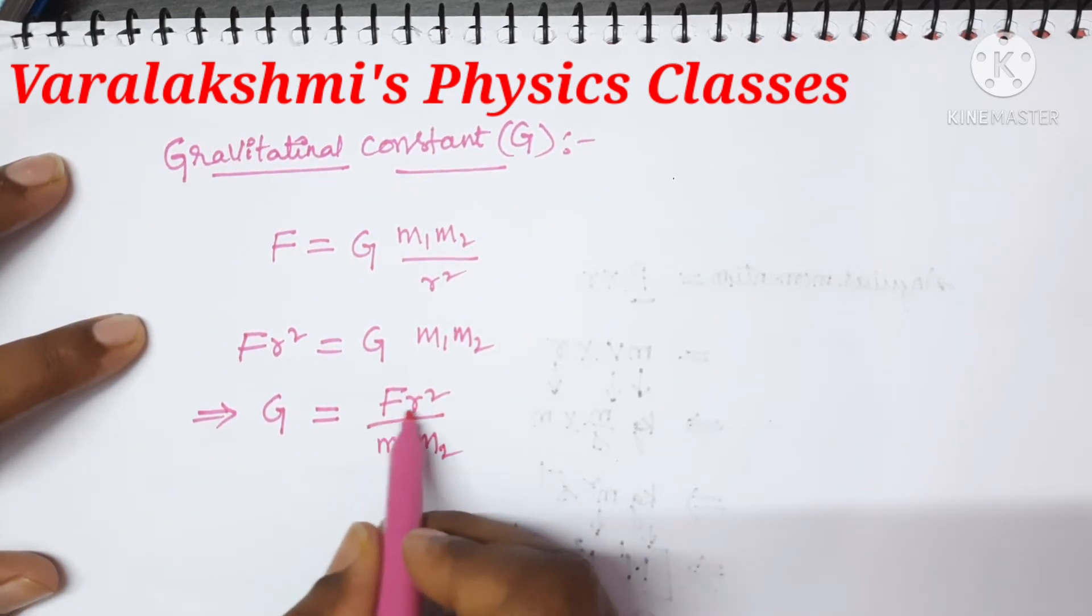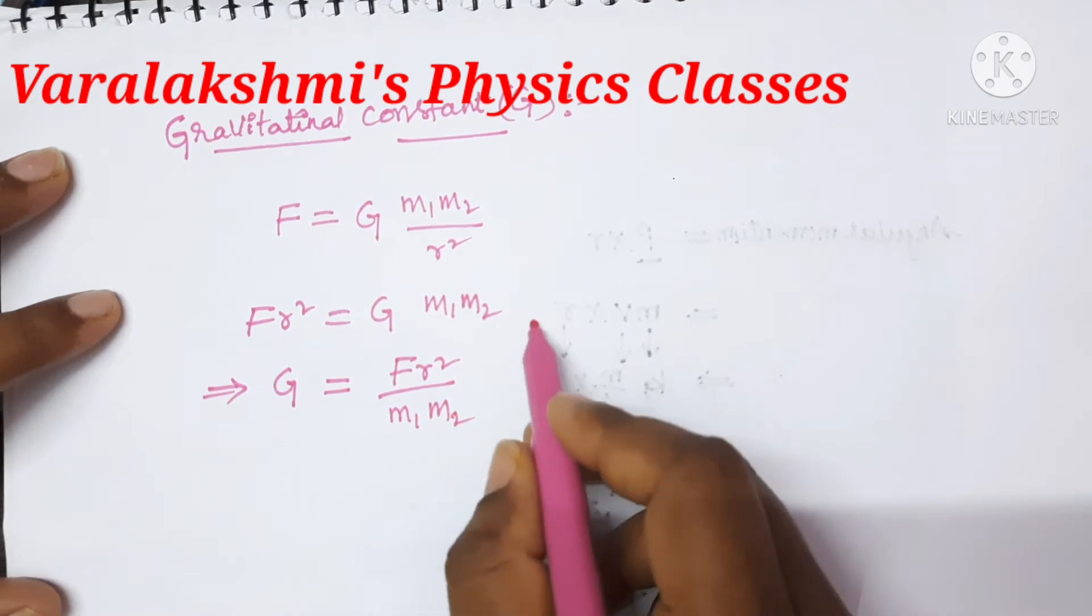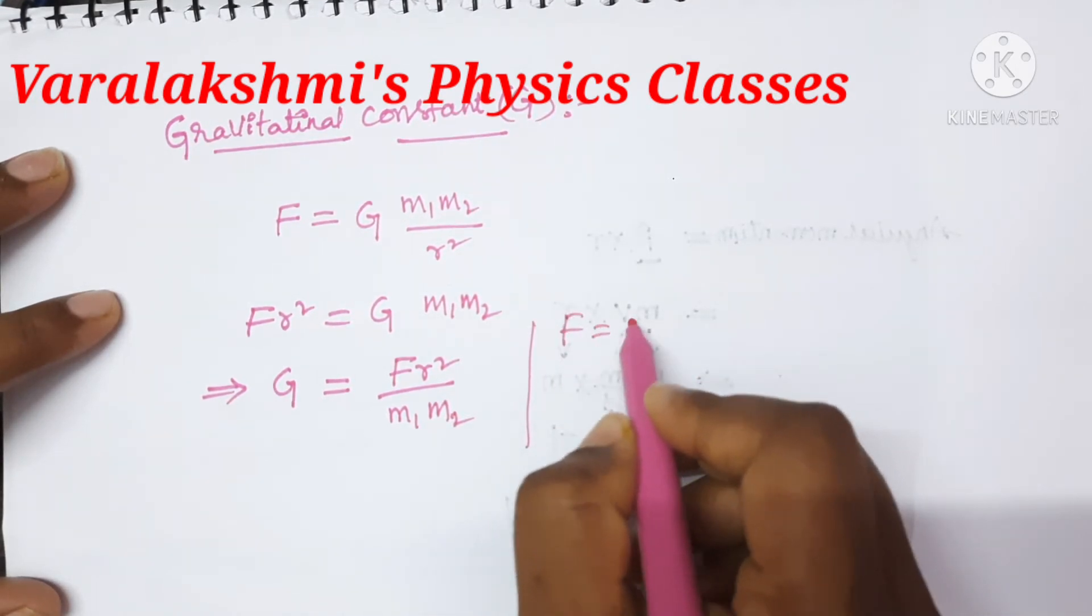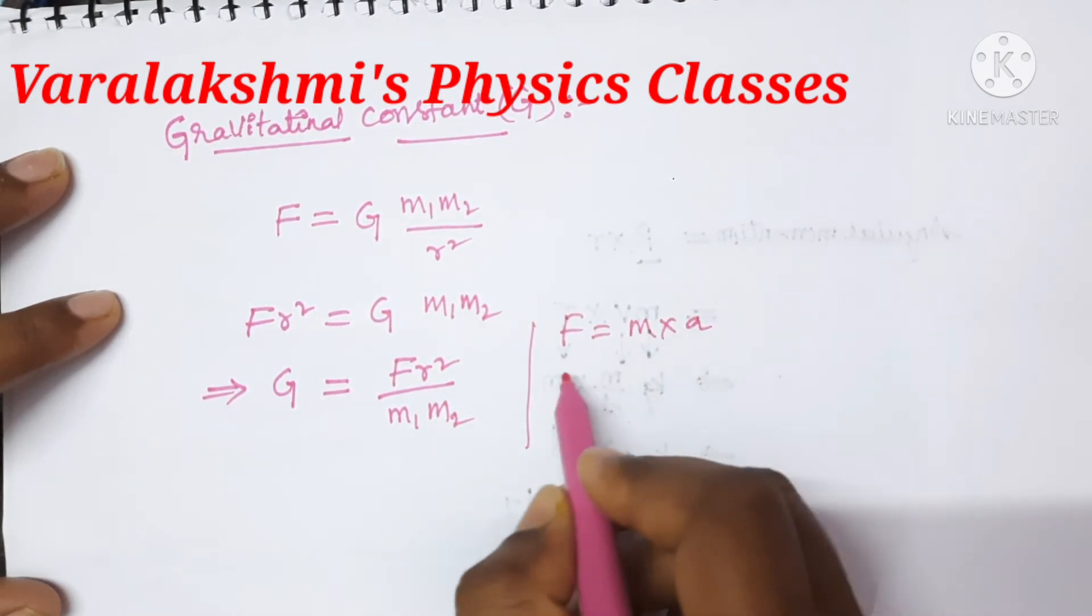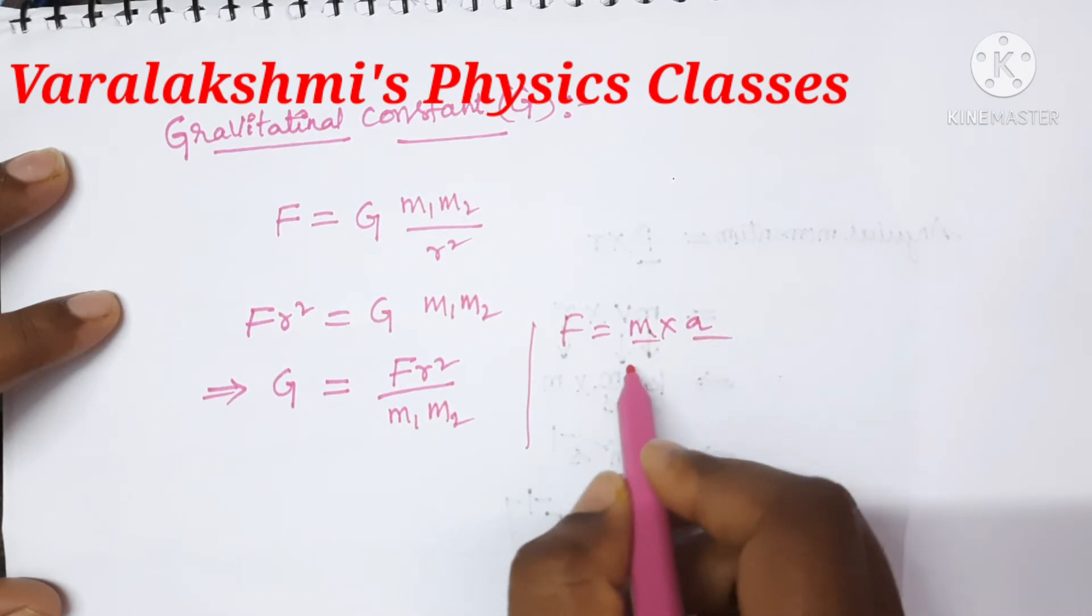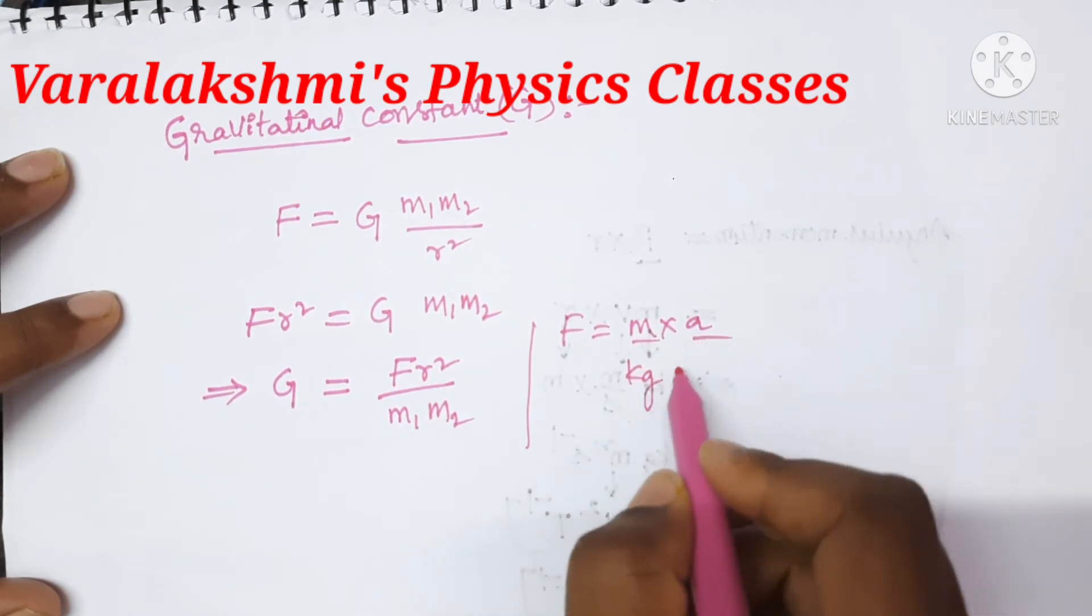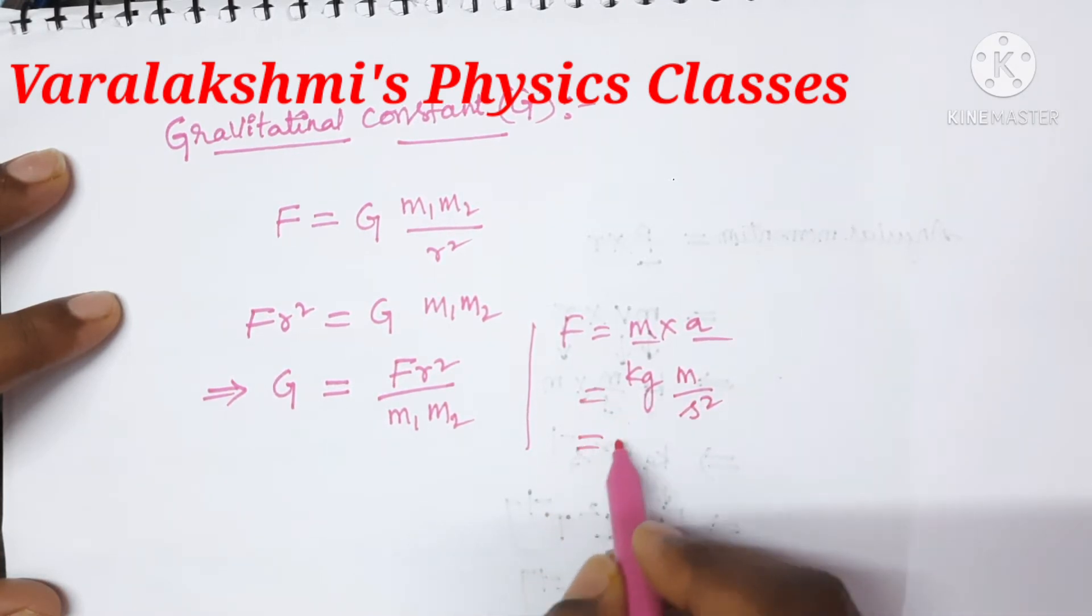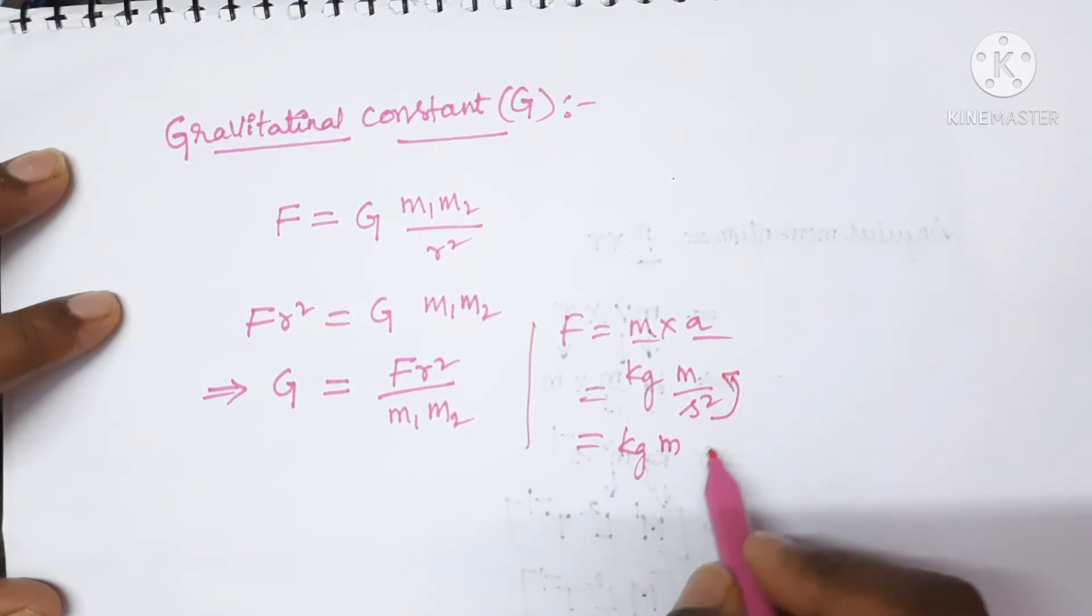Now write the formula for force. We know that force equals mass times acceleration. Write the SI unit for each term: kilogram and for acceleration meter per second square, which equals kilogram meter second to the power of minus 2.